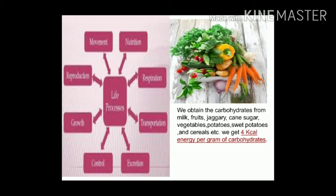Humans and other animals consume fruits and vegetables. Plants are autotrophic and prepare their own food. They utilize some of the food for themselves whereas the remaining is stored in various parts like fruits, leaves, stem, roots etc. We consume these various plant materials and obtain different nutrients like carbohydrates, fats, proteins, vitamins, minerals etc.